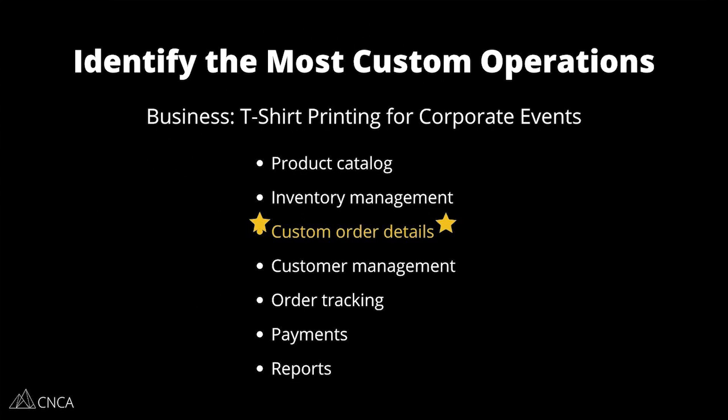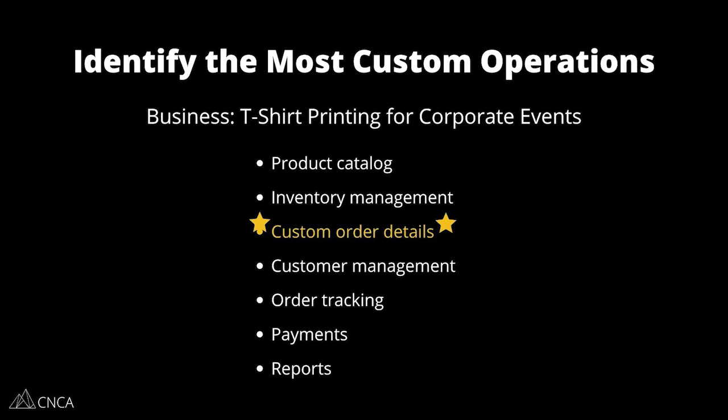Your first priority should be on building the most custom and unique part of your operation, because that's going to dictate where everything else falls in your roadmap. The most custom functionality doesn't necessarily mean the fanciest implementation of that functionality. You can still keep your interactions and your aesthetic simple for the first version. But I want you to prioritize your energy on the logic — on getting the hard things to work properly. These are the things that no other software is doing the way that you need them to work. It's the functionality with the highest value. It's what brought you here in the first place.